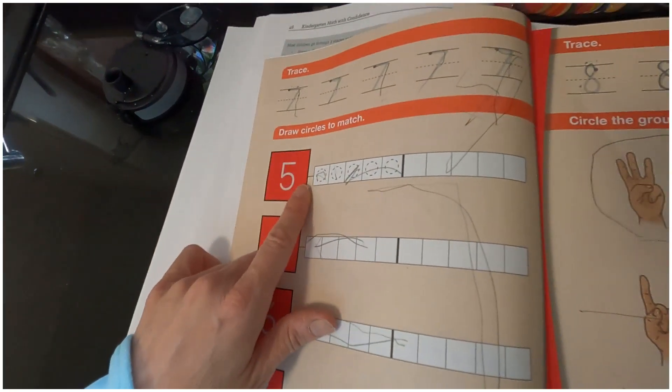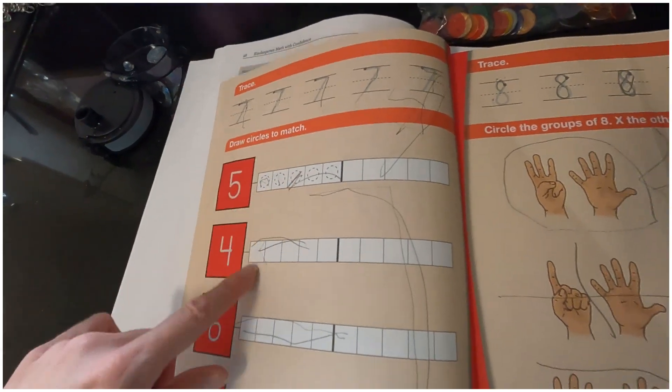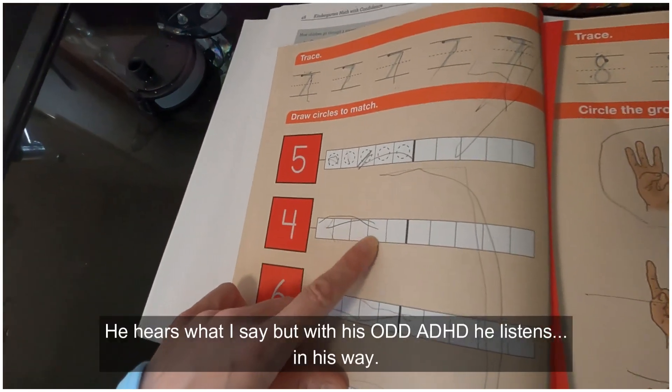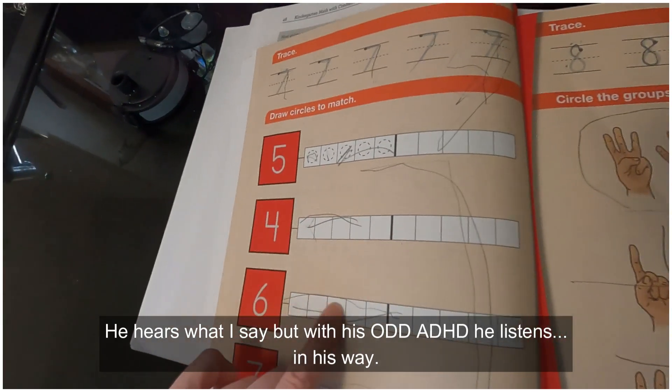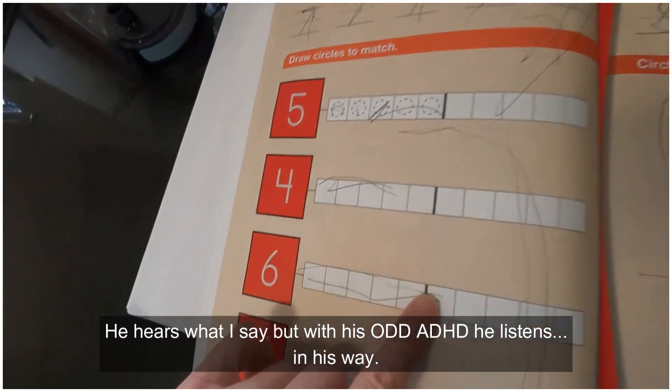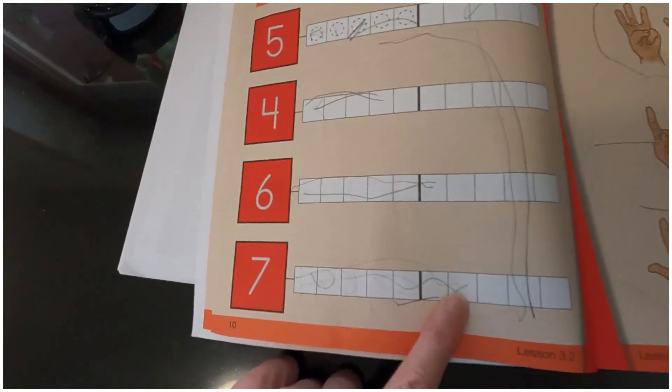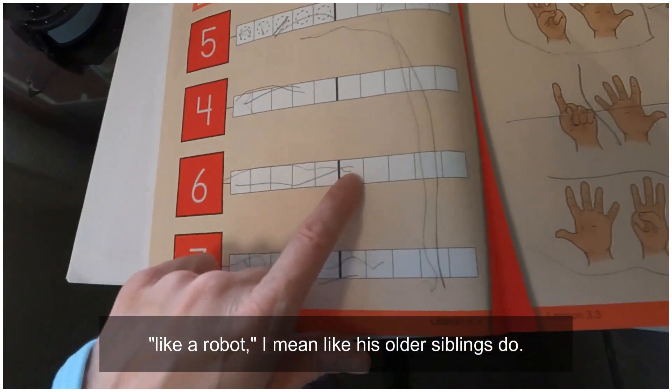And then they do seven. They have to trace the seven and then it's great. And then here draw the circles in there to match. Now my son is pretty quick, pretty smart, and so I'm more relaxed about, like, he's always gotta do something in his own way. He doesn't follow directions like a robot.